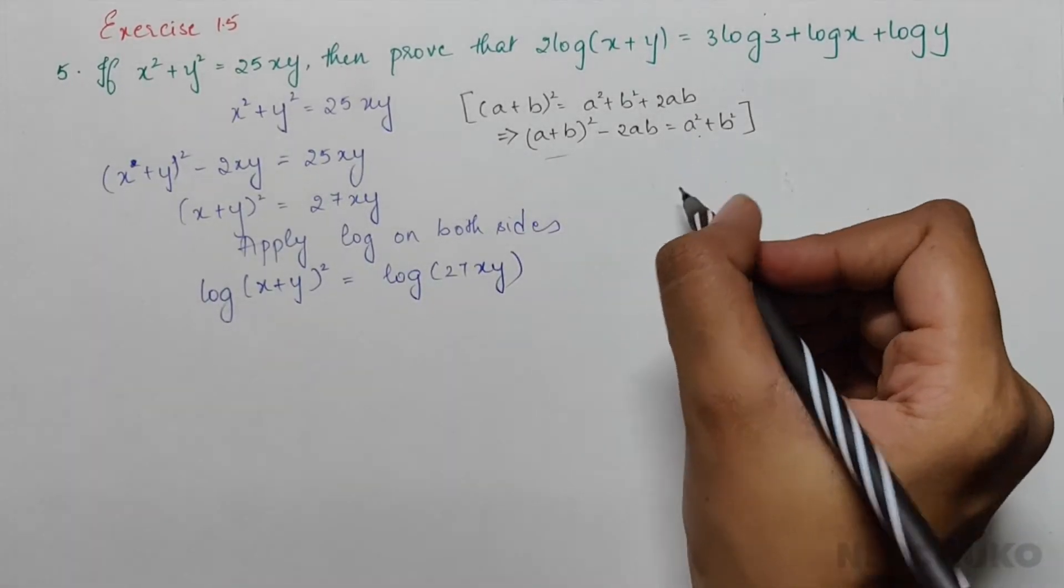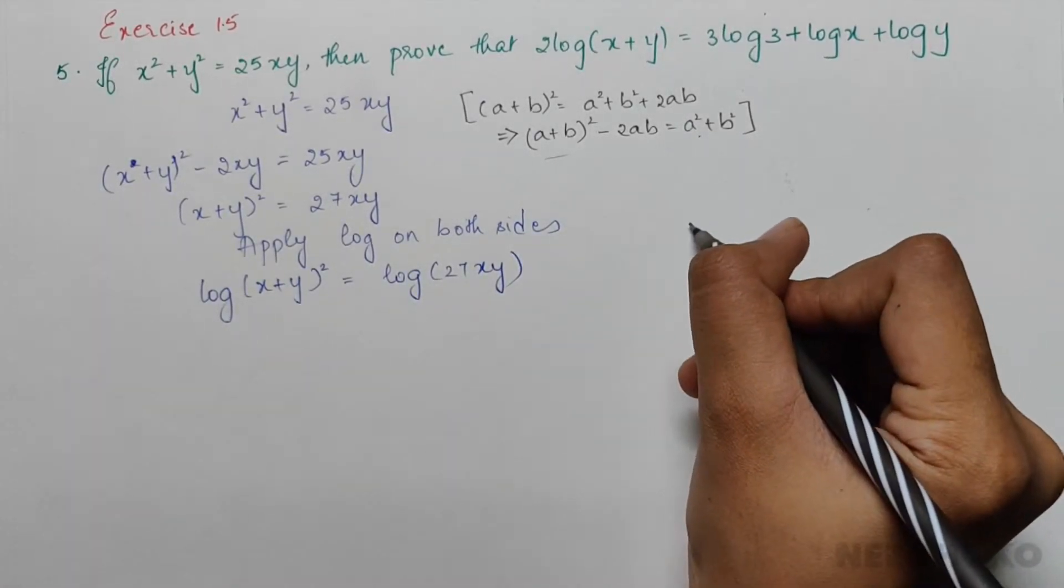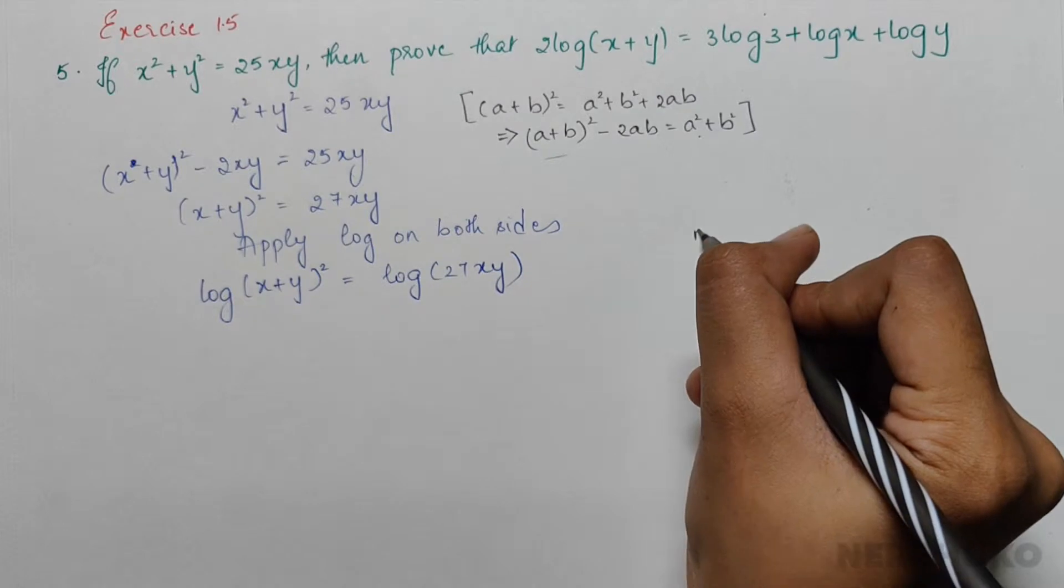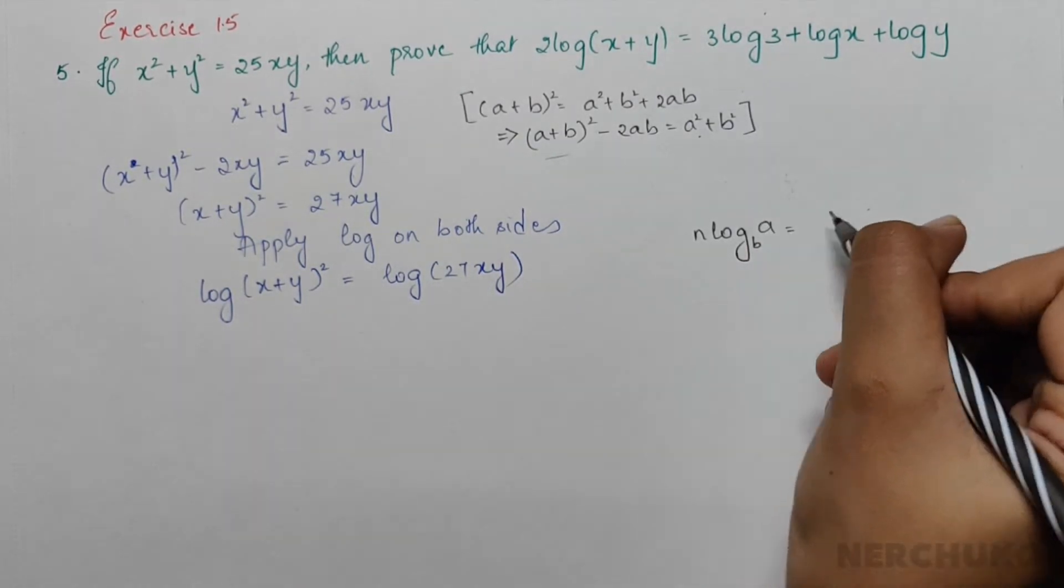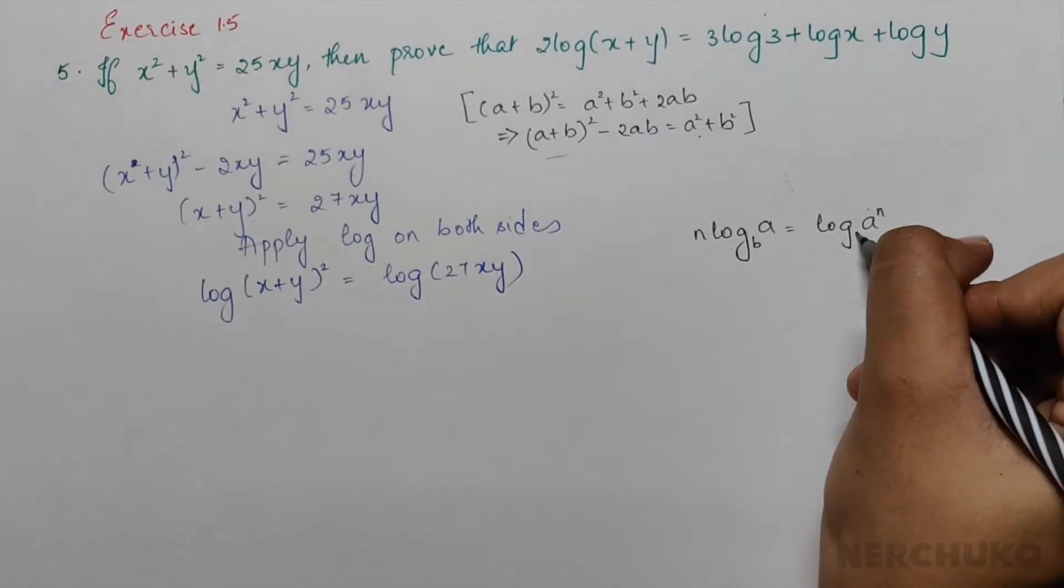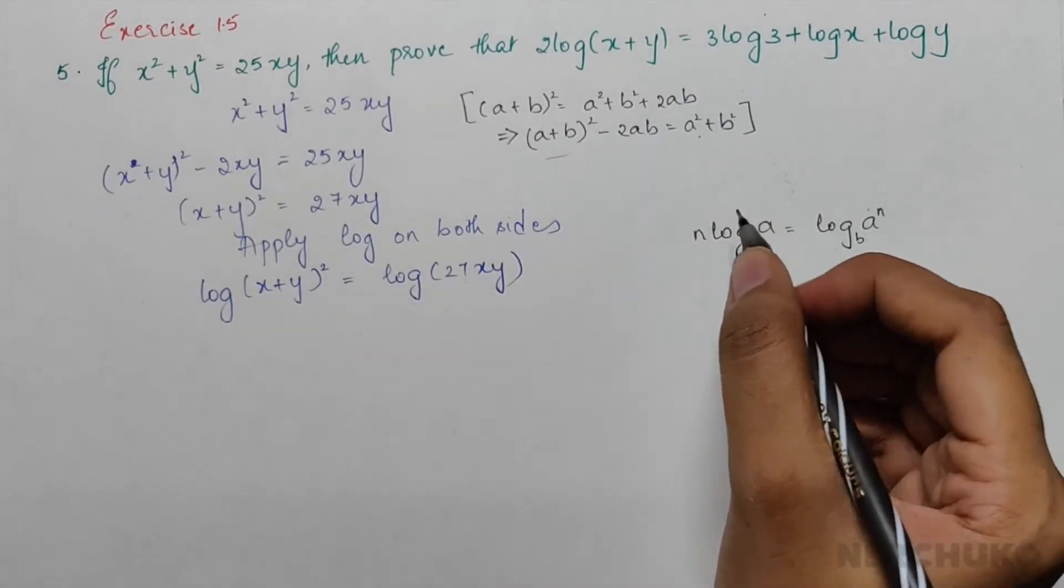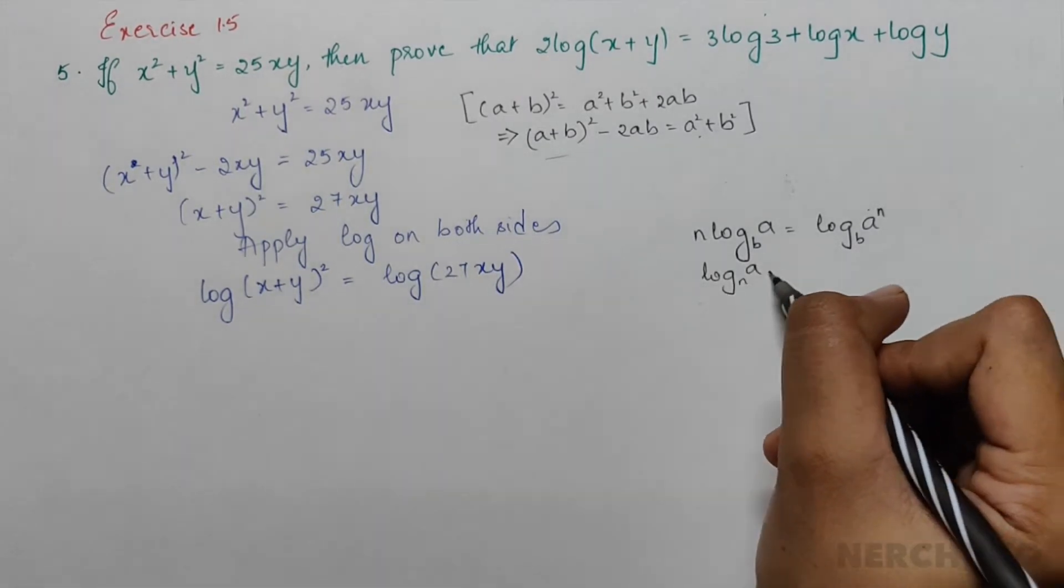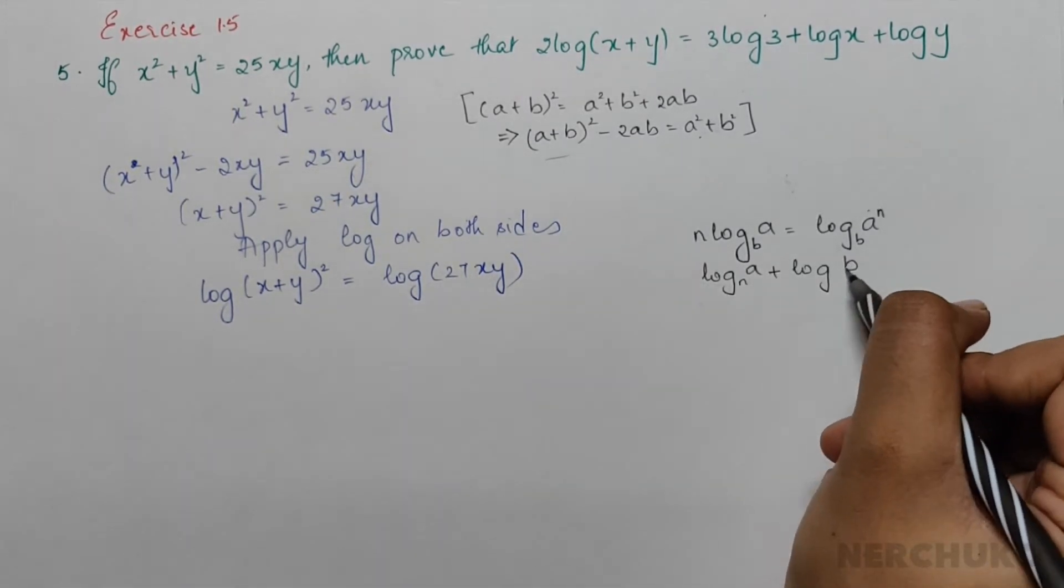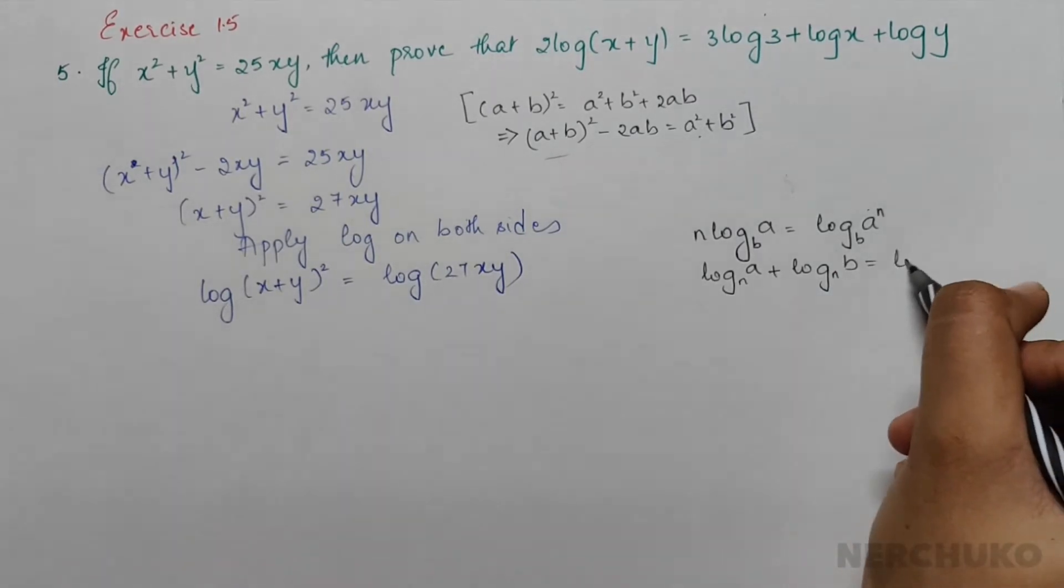For this I would apply the following formulas: n·logₐb = logₐ(bⁿ), and also logₙa + logₙb = logₙ(ab).